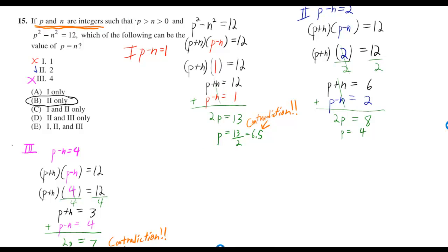If p and n are integers such that p is greater than n and n is greater than 0, and p squared minus n squared is equal to 12, which of the following can be the value of p minus n?